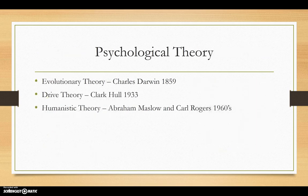There are three main psychological theories that could help explain filicide as a motivational construct. These are evolutionary theory, drive theory, and the humanistic theory.